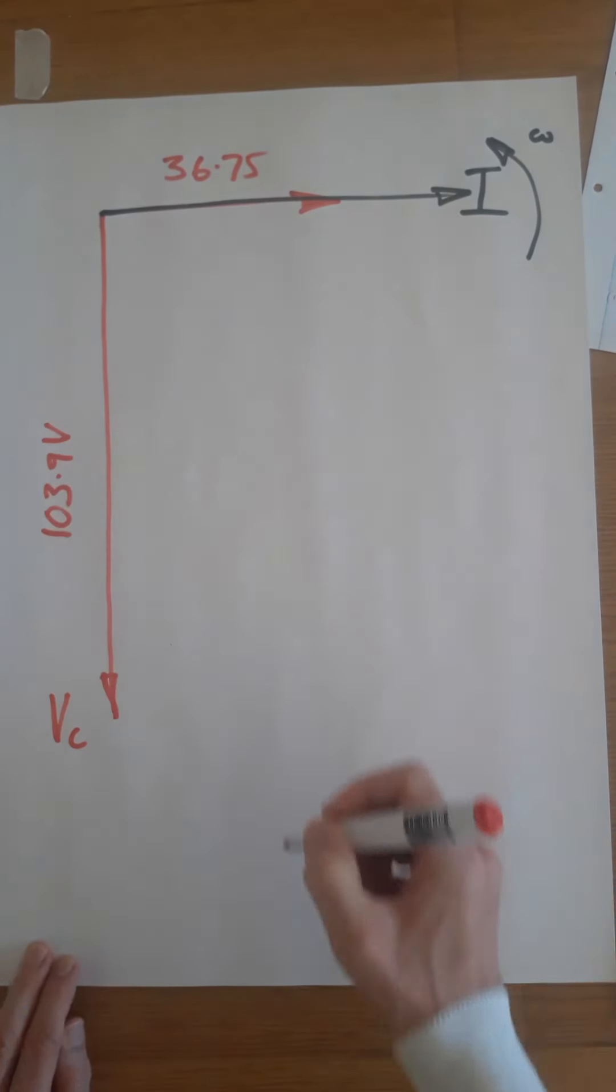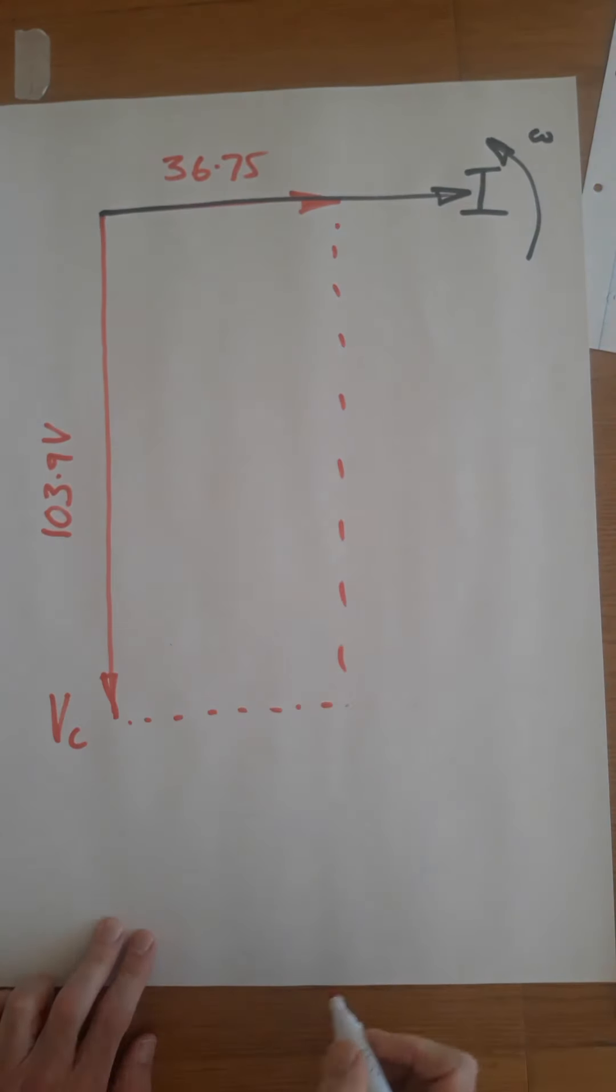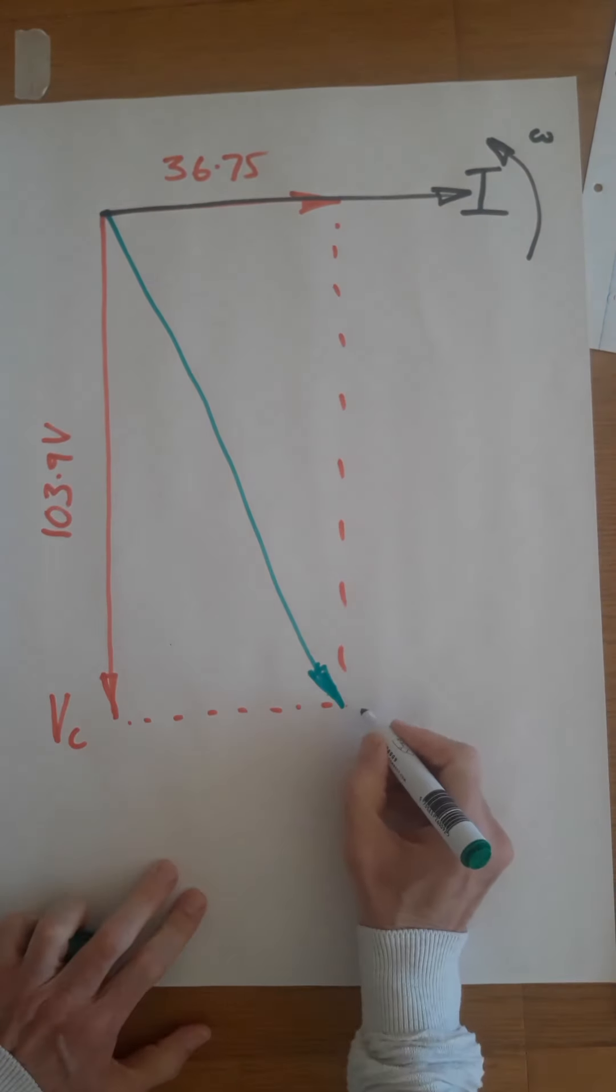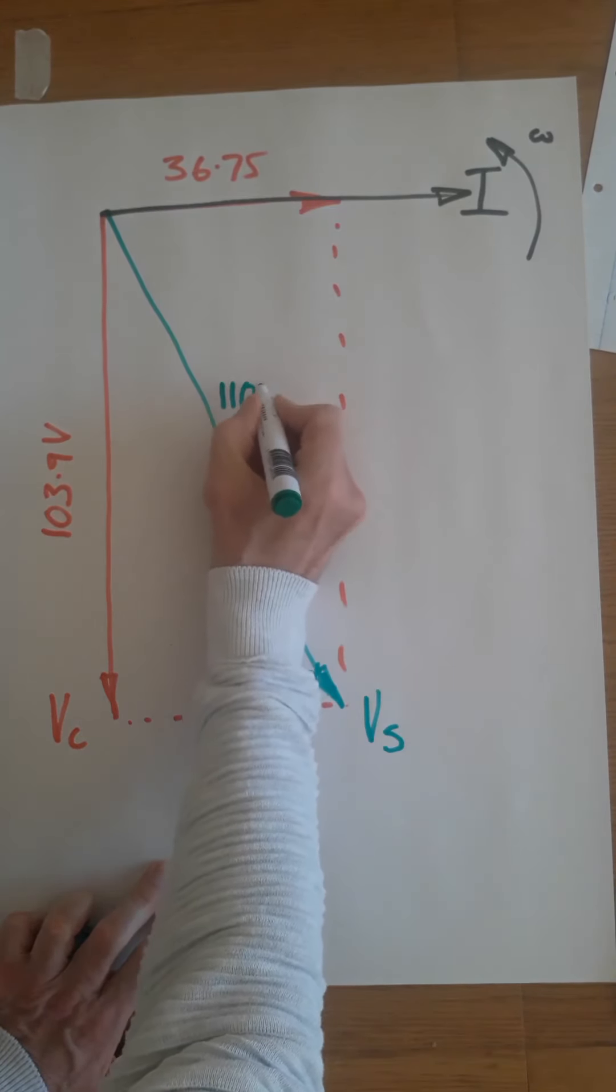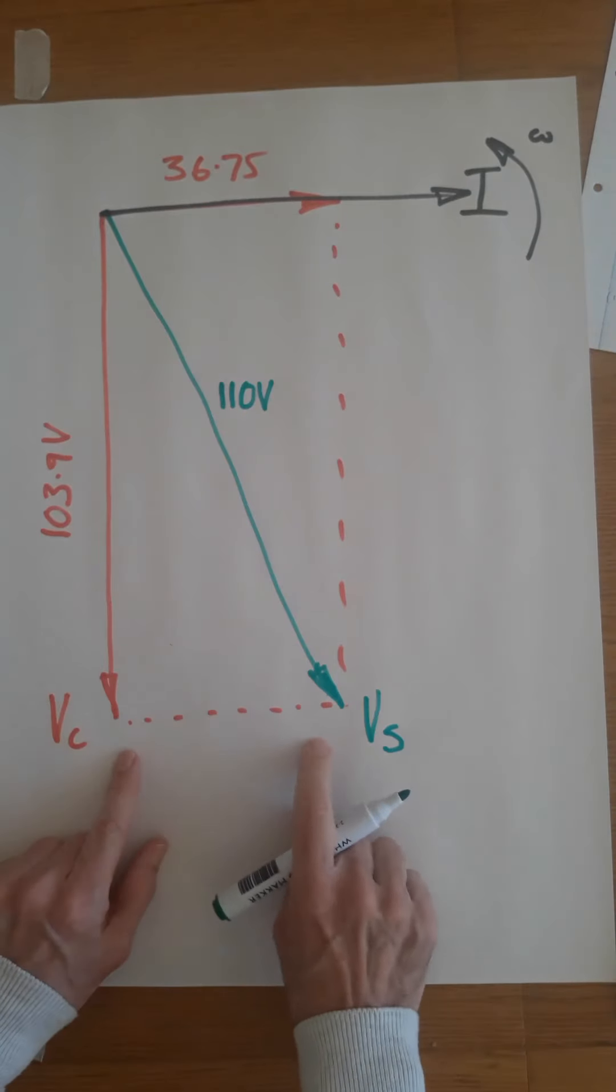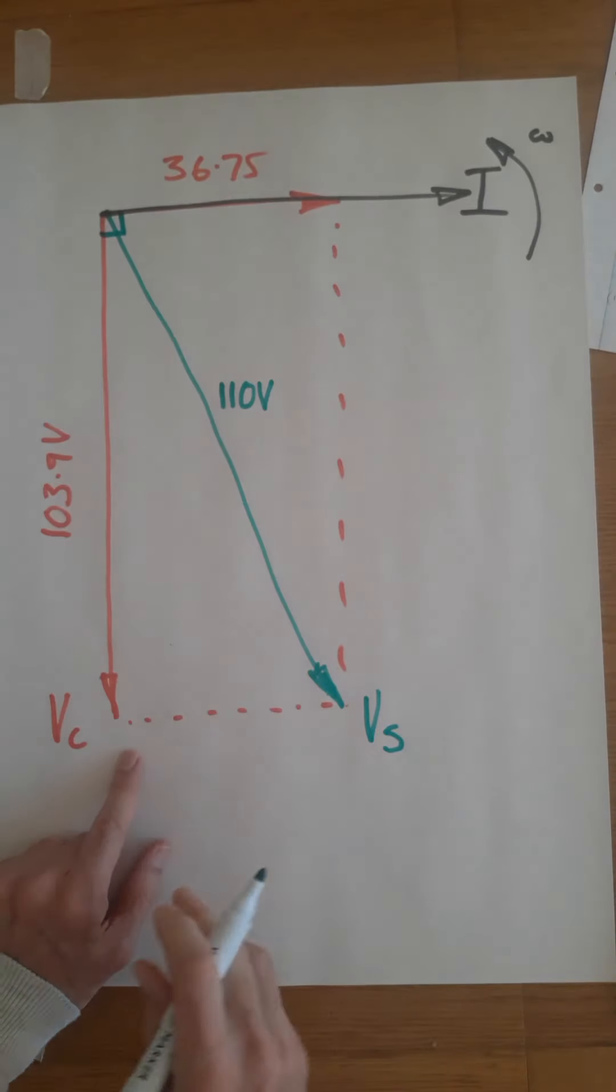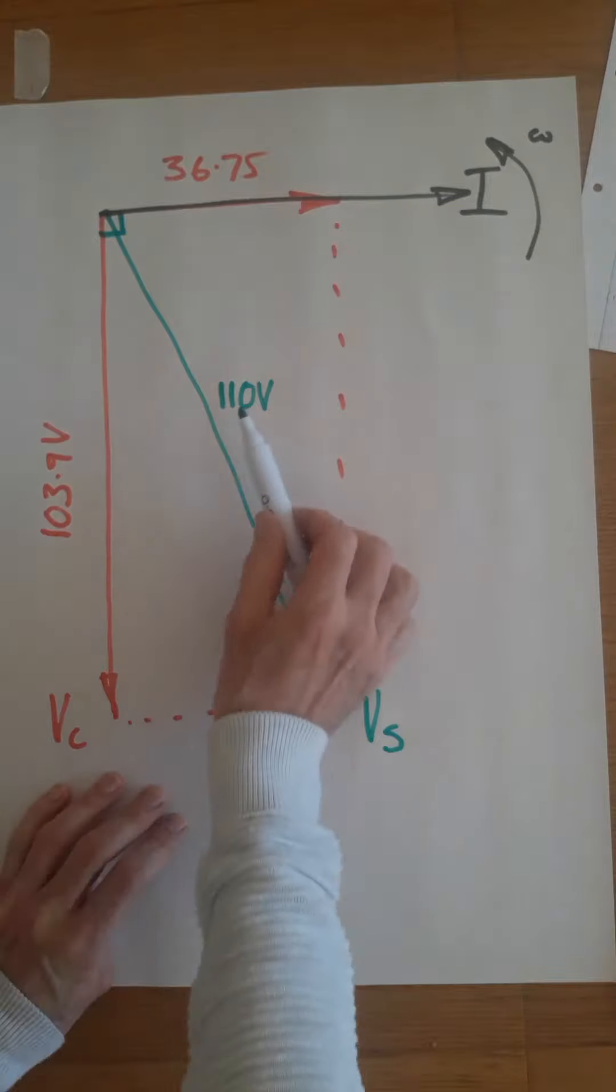And if we then do dot to dot, we can find the supply voltage. This is the supply voltage, which we know to be 110 volts. To get this, we could draw this diagram accurately on graph paper and measure it, or you could use Pythagoras. Put those numbers in Pythagoras and we should come back to 110.